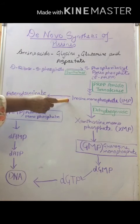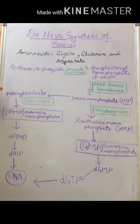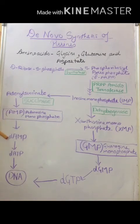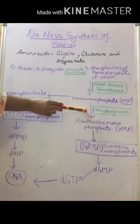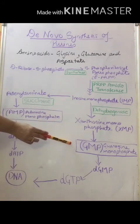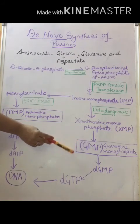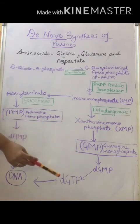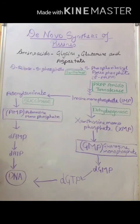Inosine monophosphate is converted to adenylsuccinate in the presence of the enzyme adenylsuccinate synthetase. Adenylsuccinate is then converted by succinase to adenosine monophosphate (AMP), which is reduced to deoxy AMP and further to DATP, which is incorporated into DNA. On the other side, inosine monophosphate undergoes dehydrogenation by the enzyme dehydrogenase to form xanthosine monophosphate (XMP), which forms guanosine monophosphate (GMP), reduced ultimately to DGTP and incorporated into DNA.